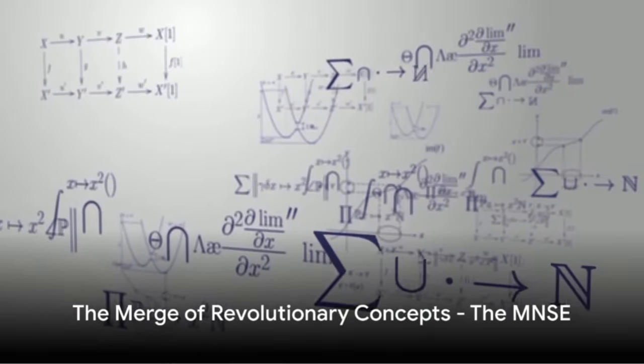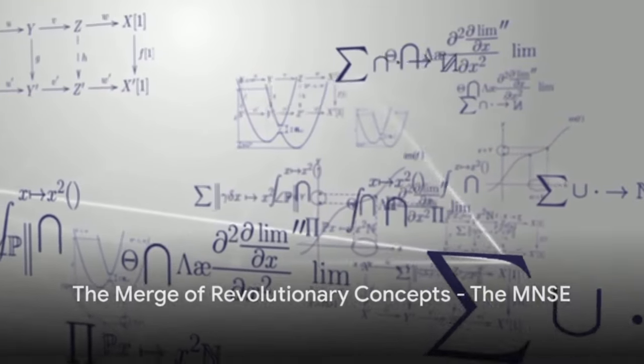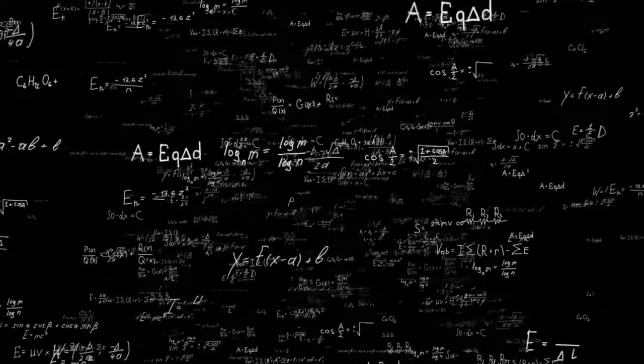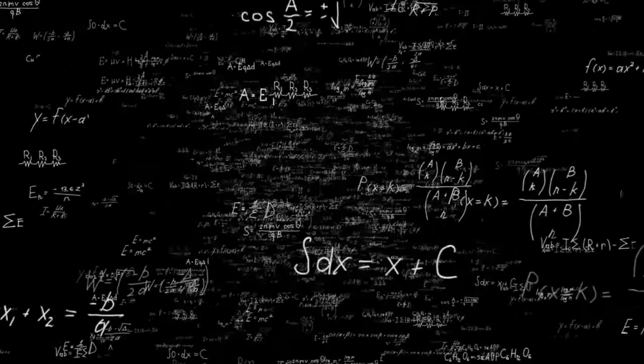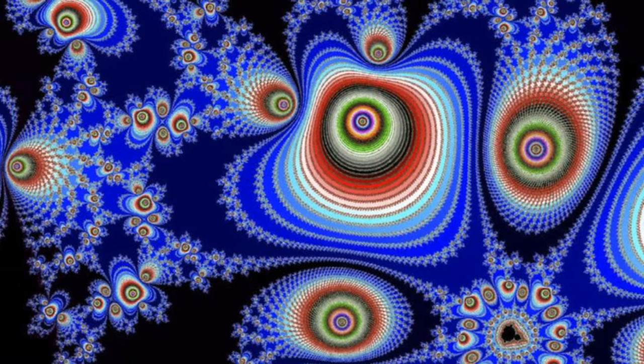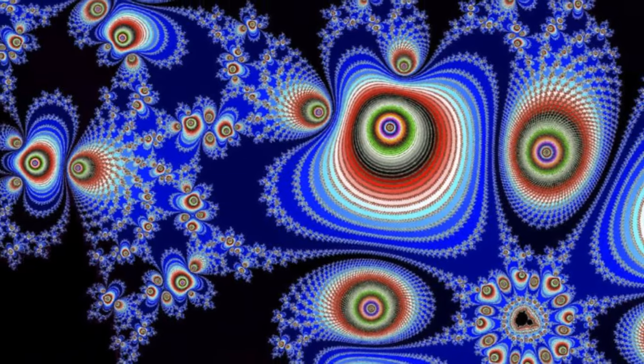Now imagine merging these two revolutionary concepts. That's where the MNSE comes in. This equation incorporates scale variables into the McGinty equation, resulting in a version that reflects the fractal nature of space-time. The traditional space-time coordinates in the McGinty equation are replaced with fractal space-time coordinates.